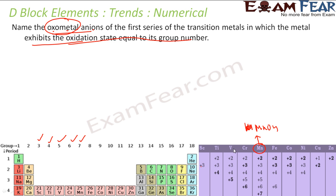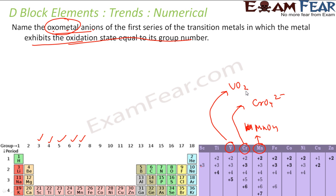For chromium, the oxo metal anion is CrO4²⁻, so chromium also qualifies — its oxidation state equals the group number and it has an oxo metal anion. For vanadium, the oxo metal anion is VO3⁻ with oxidation state +5. For titanium, the oxo metal anion is TiO3²⁻ with oxidation state +4, matching group number 4.